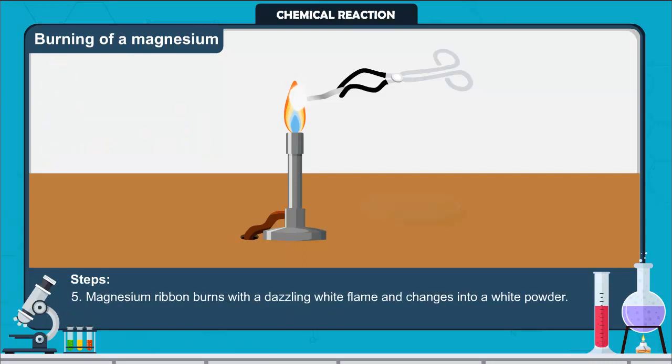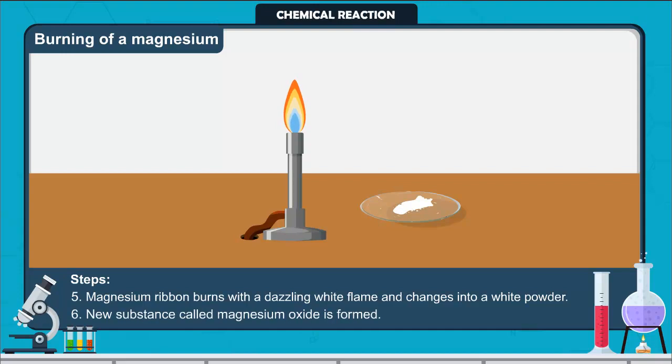You must have observed that magnesium ribbon burns with a dazzling white flame and changes into a white powder which is collected in a watch glass. Due to the reaction between magnesium and oxygen present in the air, a new substance called magnesium oxide is formed.